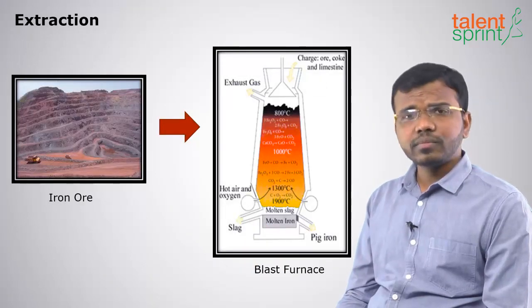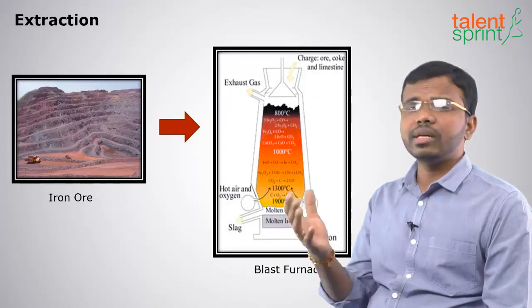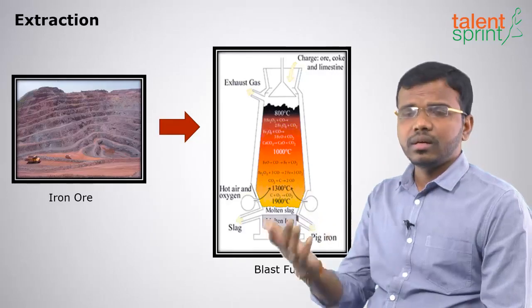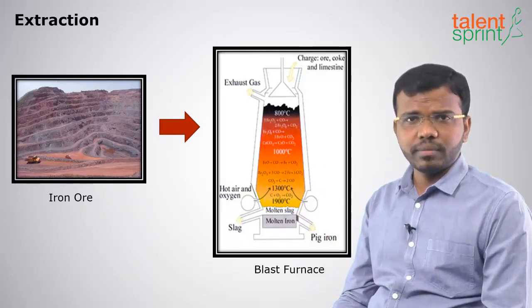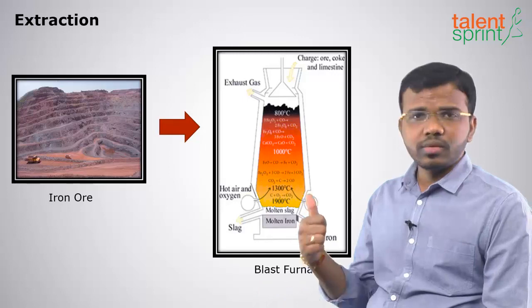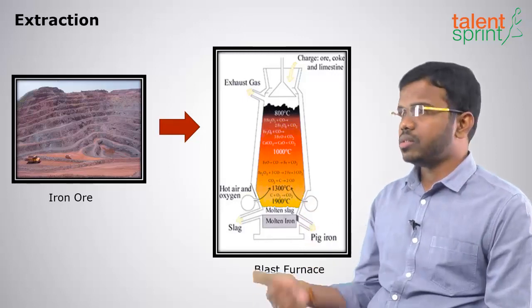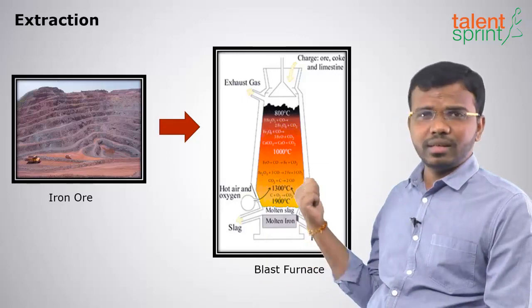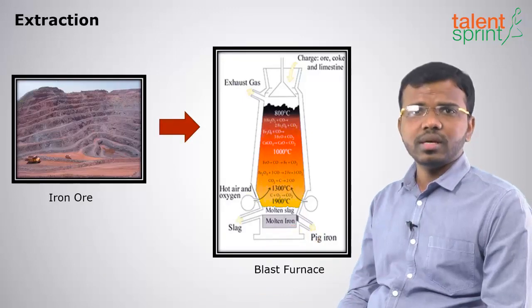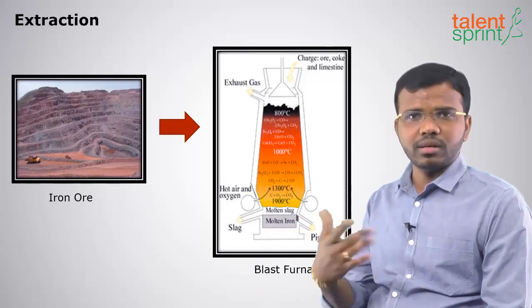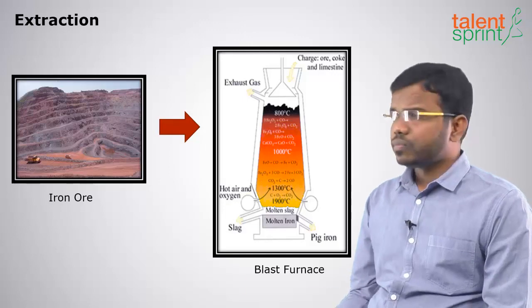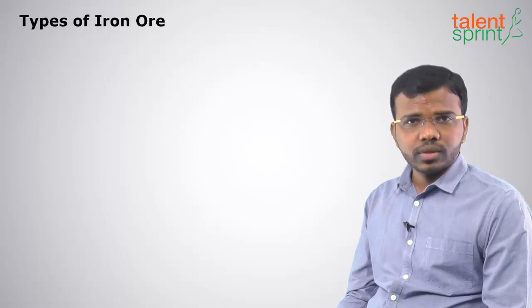Iron is generally extracted from iron ore. You can detect iron ore by its magnetic properties. In a blast furnace it is heated to high temperatures, producing by-products like pig iron and water. This is the process of extraction of iron.